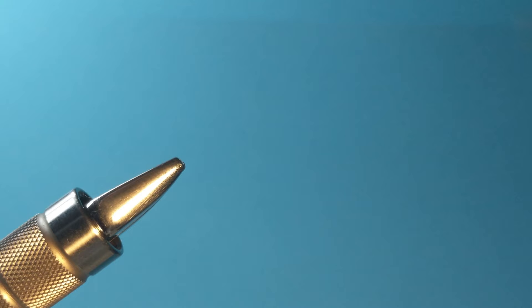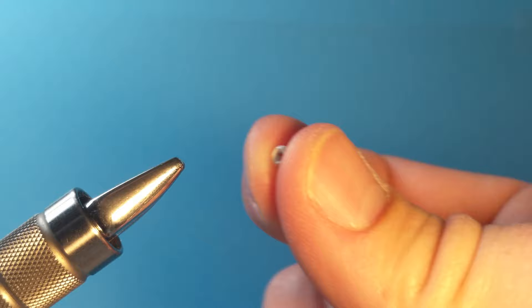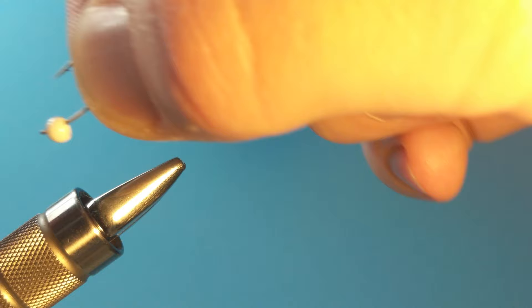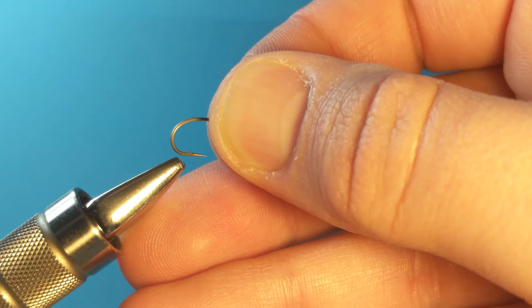So we're going to start with a size 12 hook, a curved hook, and then we have a white headed bead. So let's put the bead on there first. Remember to put the non-tapered end in. So once you have that on there we're going to actually get this into our vise.